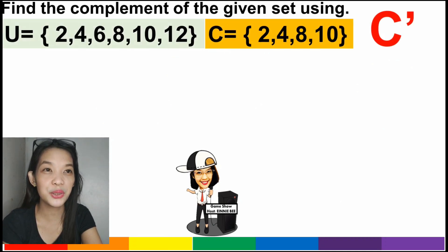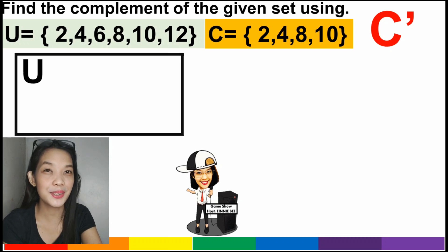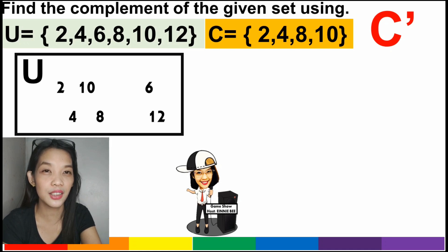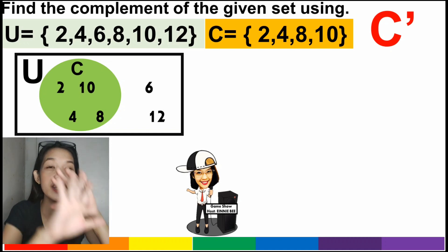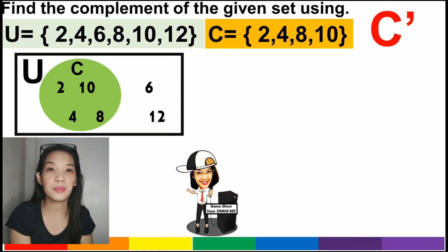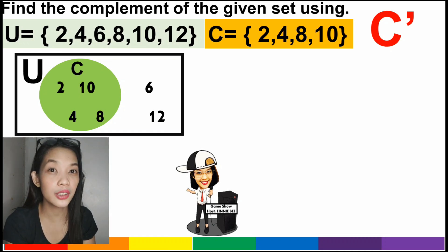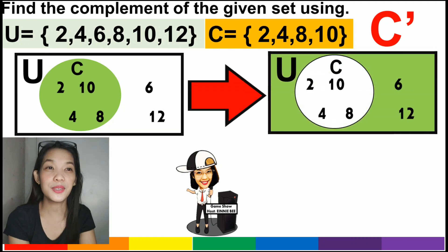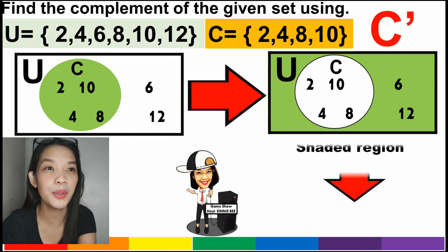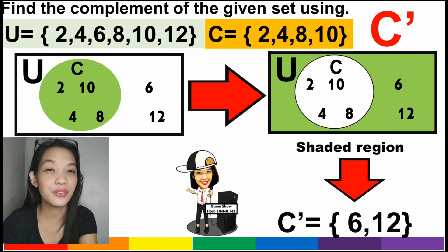To get the complement of C using the Venn diagram, we illustrate the universal set with elements 2, 4, 6, 8, 10, and 12. The elements of C are 2, 4, 8, and 10. To get the complement, everything in the universal set but not in C. The shaded region will be the complement, and those elements are 6 and 12.